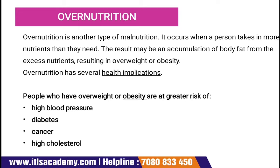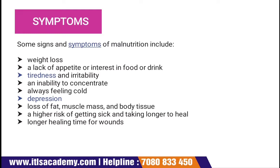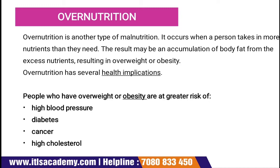Over-nutrition has several health implications. People who are overweight or obese are at higher risk of BP problems, diabetes, cancer, and high cholesterol. According to a WHO 2020 report, 5.7 percent of children under 5 are overweight, an increase from 5.4 percent in 2000. This shows that over-nutrition is a type of malnutrition having an adverse effect on both children and adults.